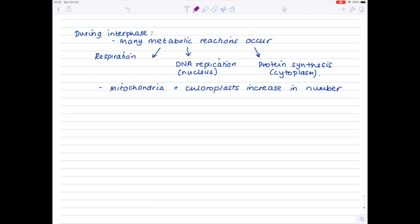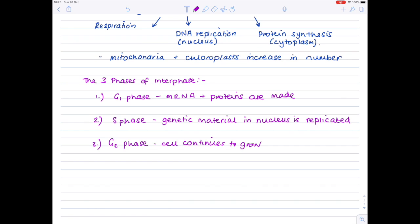So we've said what sort of things happen during interphase, but you also need to be aware that interphase consists of three phases. Here I've listed the three phases of interphase. The first phase is the G1 phase, the second is the S phase, and the third is the G2 phase. And I've written a brief summary of what happens in each.